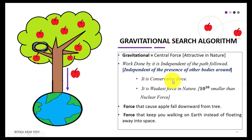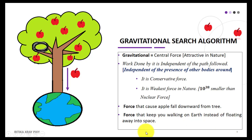In the Gravitational Search Algorithm, gravitational force is a central force that is attractive in nature and is independent of the path followed — it is a conservative force, independent of the presence of other bodies around it. Examples include the force that causes an apple to fall downward from a tree, or the force that keeps you walking on Earth instead of floating away into space.